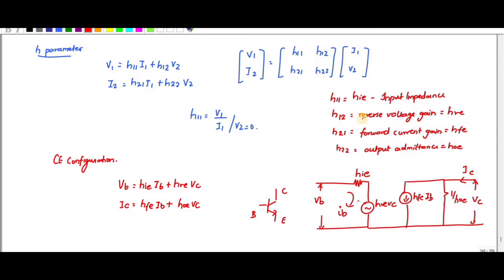We have two equations. The first is V1 and I2. V1 is equal to H11·I1 plus H12·V2. I2 is equal to H21·I1 plus H22·V2. To find the value of H11: H11 is equal to V1 divided by I1, when V2 is equal to 0.